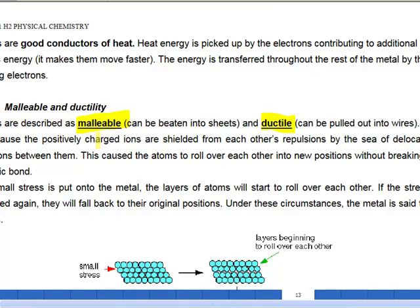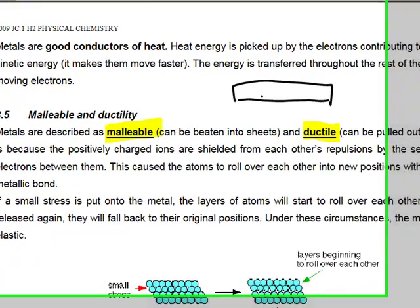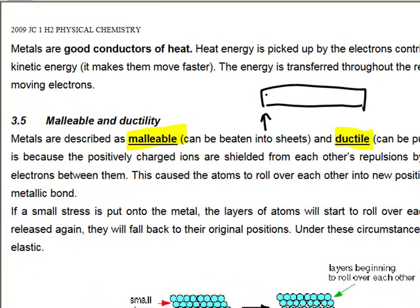They are also very good conductors of heat because heat energy can be picked up by the electrons and they can transfer the kinetic energy. So if I have a piece of metal and I start heating it up here, the electrons here will move and they will transfer the kinetic energy to some of the atoms over here. Therefore metals are very good conductors of heat.